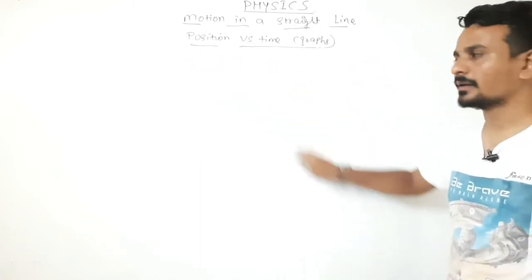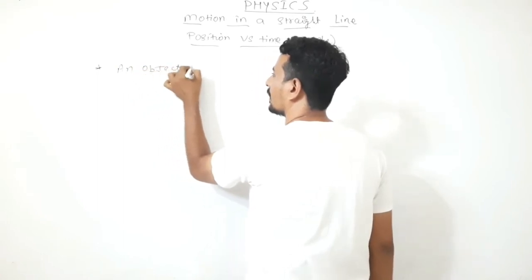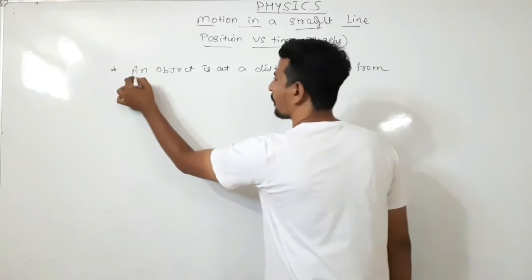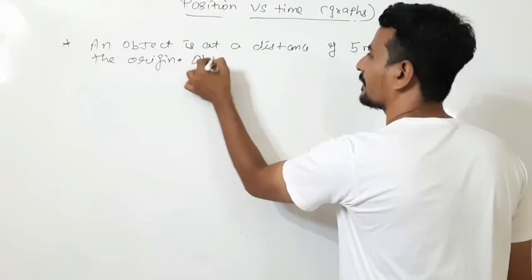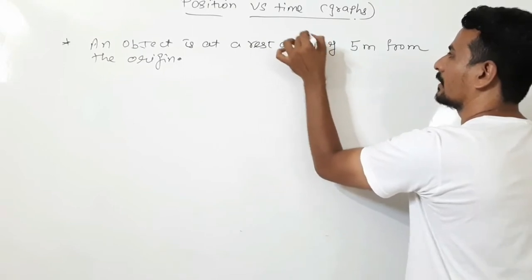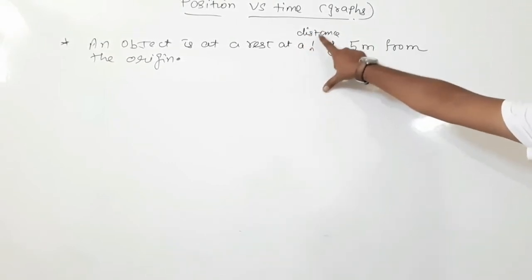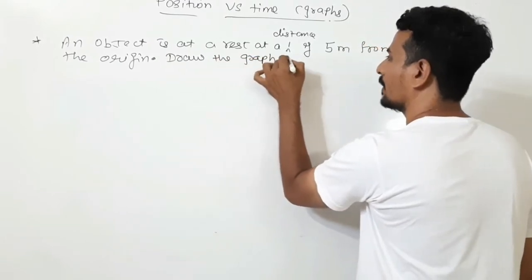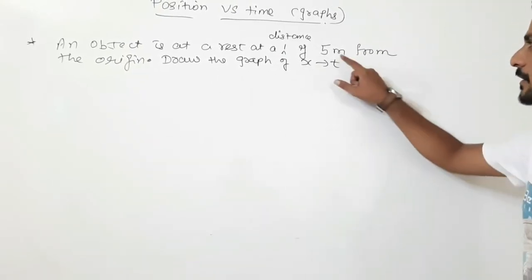We will first understand the position-time graph of a body. Suppose an object is at a distance of 5 meters from the origin and the object is at rest. Let us analyze this situation: an object is at rest at a distance of 5 meters from the origin. Draw the graph of position versus time. An object is at rest and it is at a distance of 5 meters from the origin.